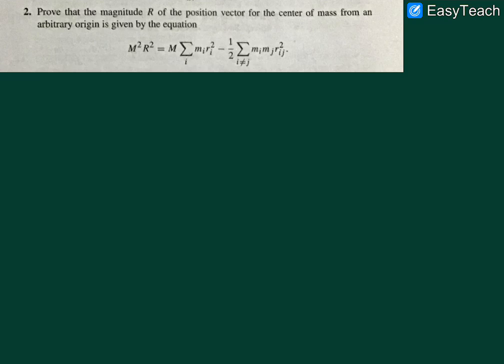Hey, welcome back. Let us solve question 2 from Classical Mechanics by Goldstein. The question states: prove that the magnitude R of a position vector for the center of mass from an arbitrary origin is given by the equation shown.